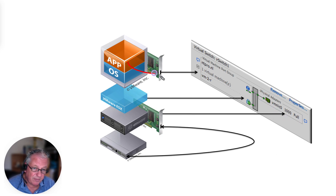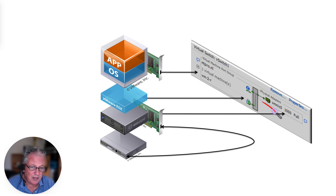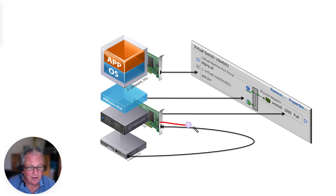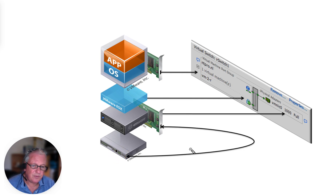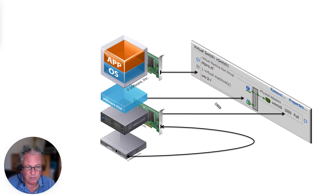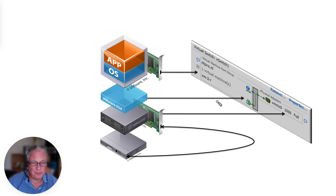So eventually the traffic travels from the VM into the port group, into the switch, onto the physical network adapter, and from the physical network adapter it travels through the physical switch. On this physical switch, you have to create a trunk port if you want to configure VLAN ID tagging on a port group.